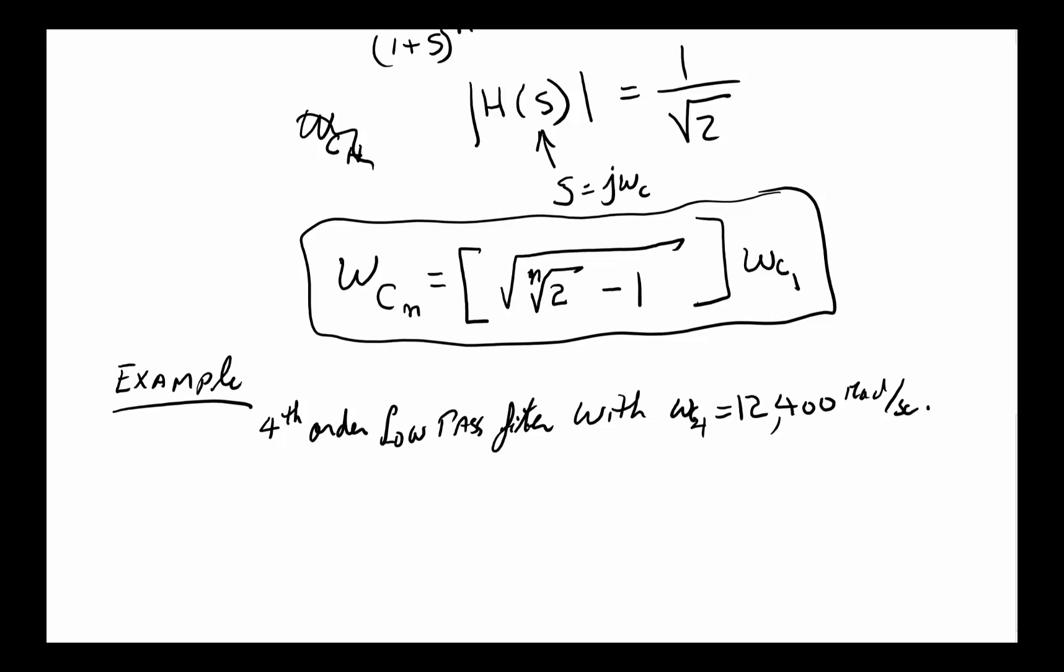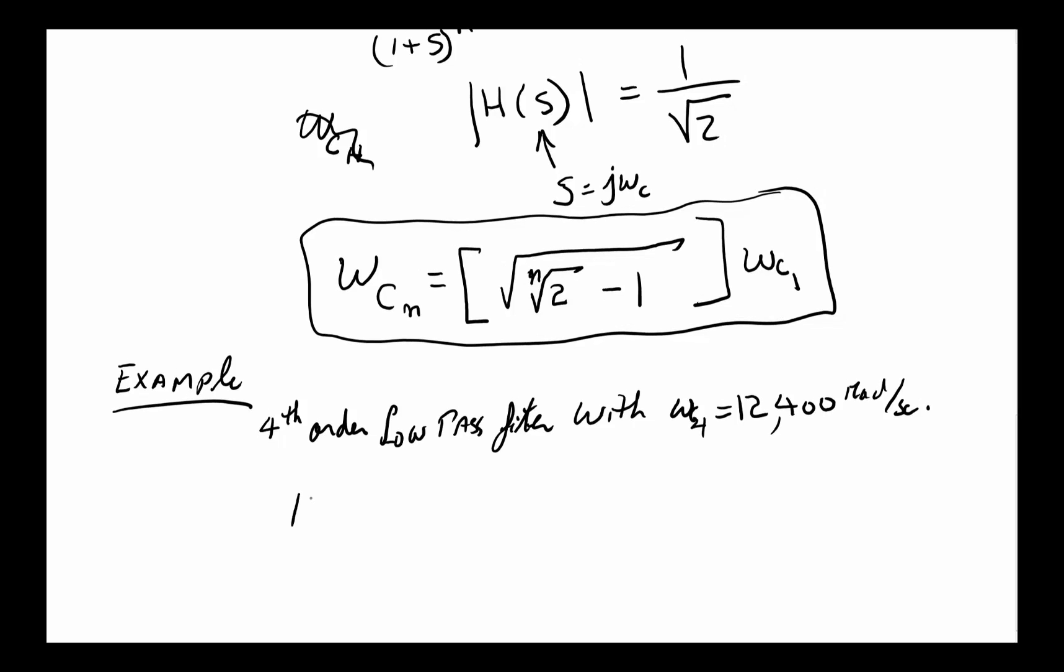So how do we go about that? Well, first of all, it's fourth order, so our H(s) is going to be basically, we don't know what the omega_C is, it's going to be basically omega_C of the first-order, just one filter, and the bottom is going to be S plus omega_C to the power of four.